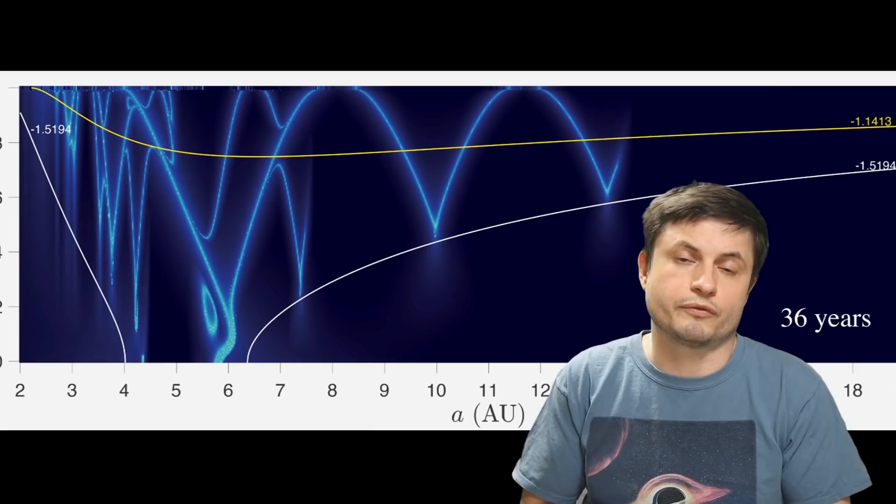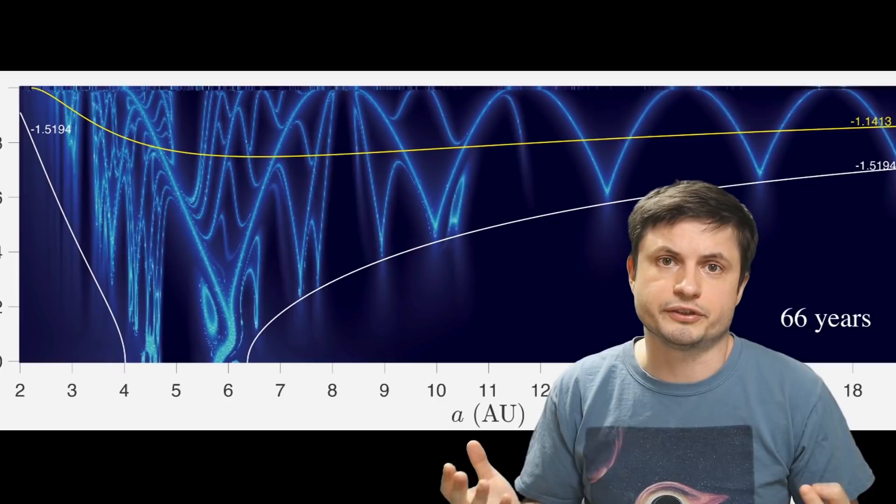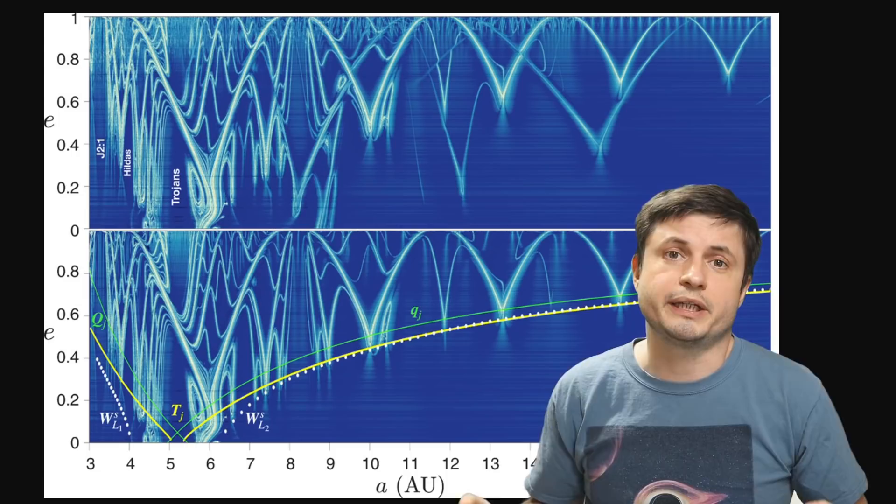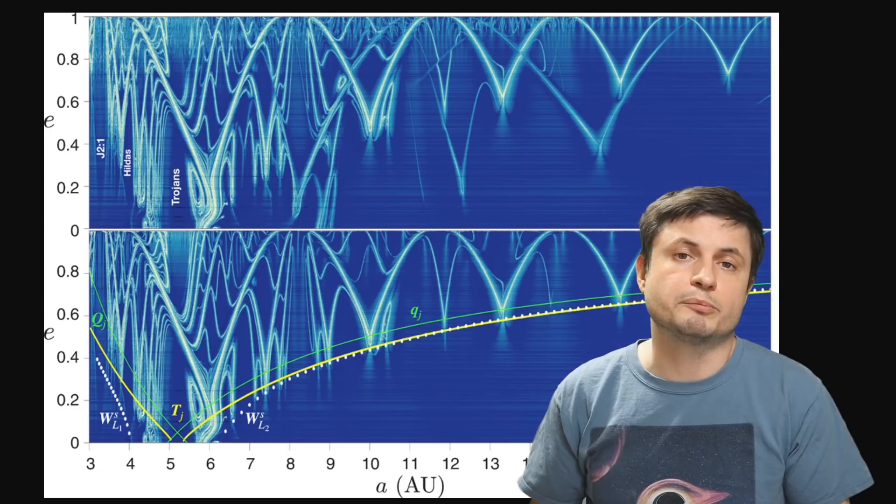But being able to calculate where, for example, the next large manifold will appear that we can actually use for a transfer of a spacecraft to another planet is basically what all of this is about. Or at the same time, being able to predict if one of the distant transneptunian objects becomes sort of embedded in one of these systems and then gets transferred to the inner solar system.